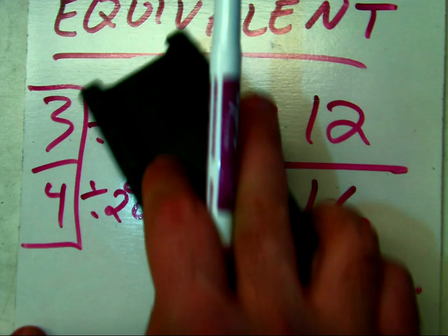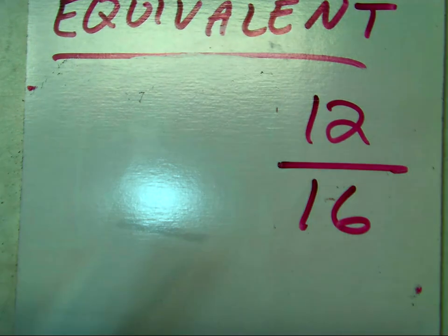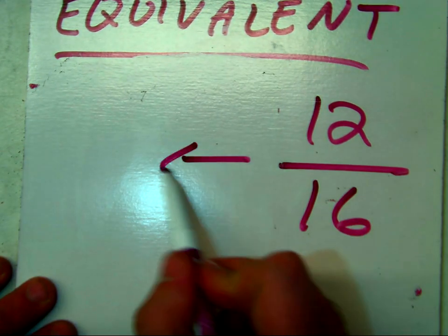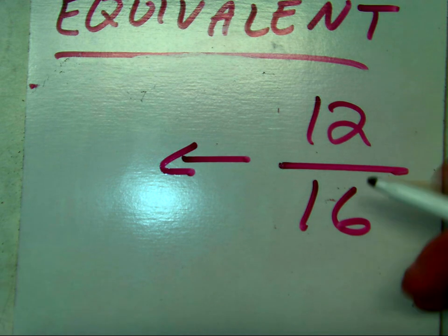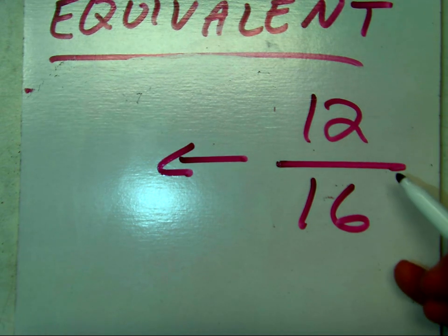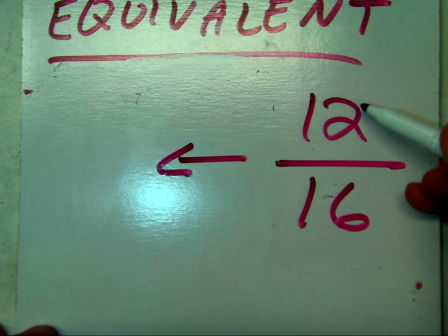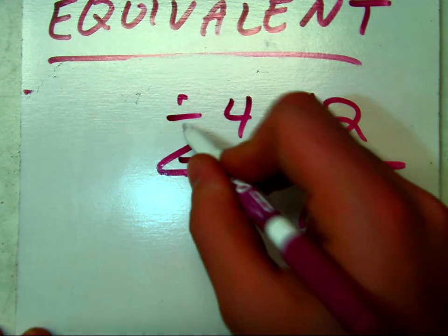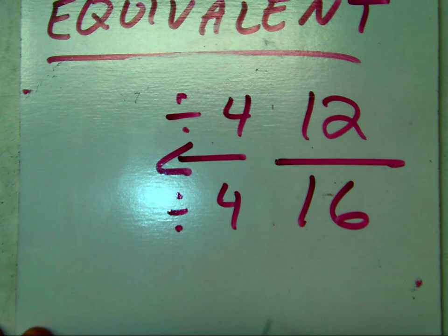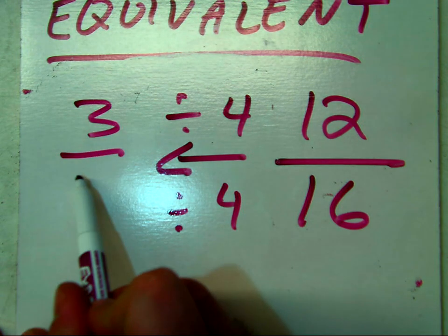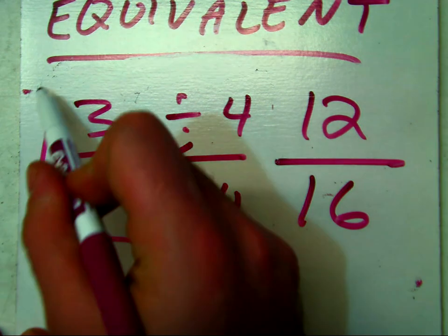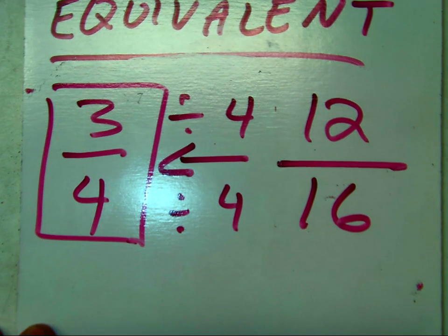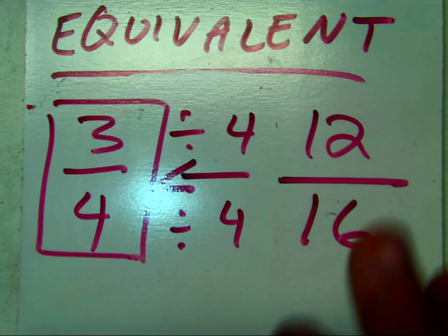In order to shortcut that, I could just divide by what we call the greatest common factor. The greatest common factor, and if you want to find out, there's another video for that, the greatest common factor of twelve and sixteen is going to be four. So I can divide both top and bottom by four, and I will get three-fourths. This will be the simplest form of twelve-sixteenths.